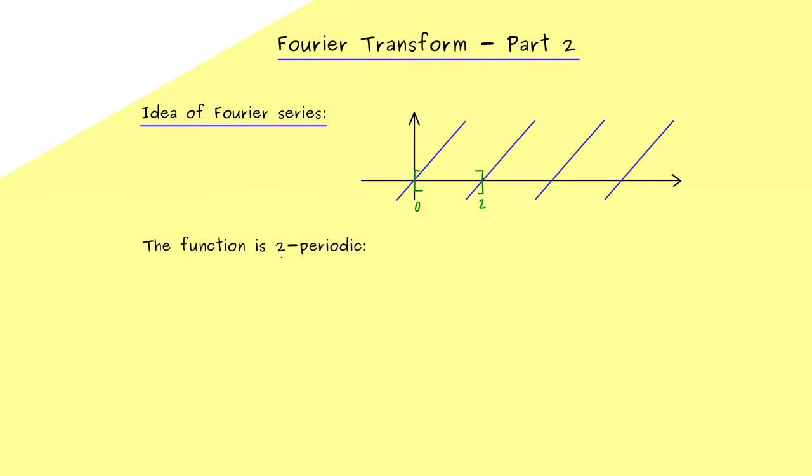Now, for the case that you have never seen a periodic function before, let's write down the definition. It simply means if you have the input for the function f shifted by the number 2, then the result, the value of the function, does not change at all. So we get out f(x), no matter which x we choose.